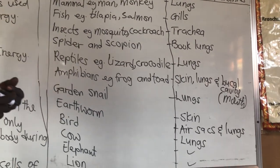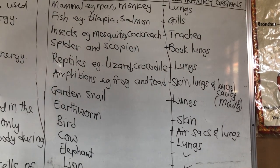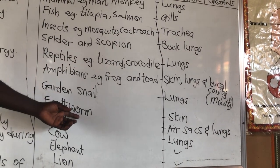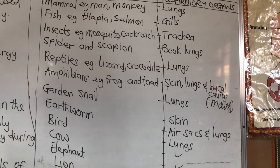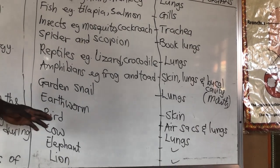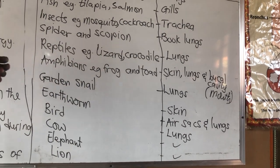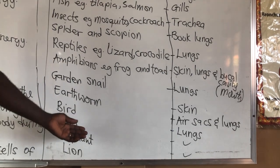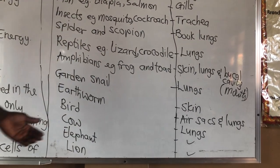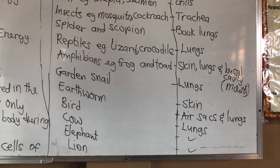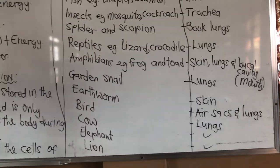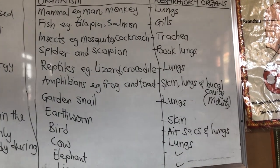The garden snail also uses the lungs to exchange gases. The earthworm uses the skin for exchange of gases. Birds use the air sacs and also the lungs for exchange of gases. Cows, elephants, and lions all use the lungs, like human beings, to exchange gases. These are a few organisms and their respiratory organs.